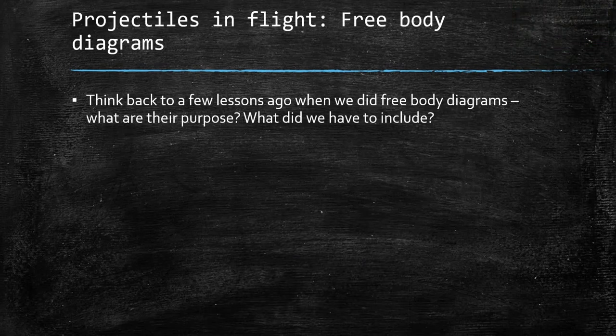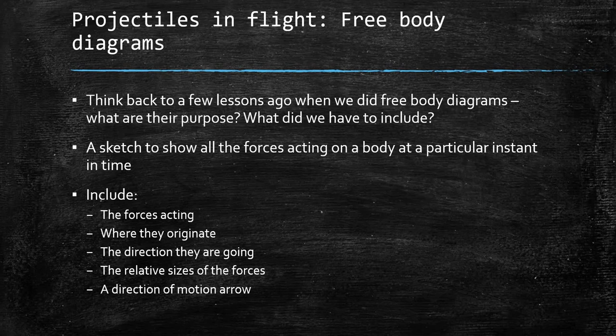Thinking back to free body diagrams — what are their purpose and what did we have to include? A free body diagram is a sketch to show all the forces acting on a body at a particular instant in time. We have to include the forces that are acting, where they originate, the direction they're going, the relative sizes of the forces, and a direction of motion arrow.